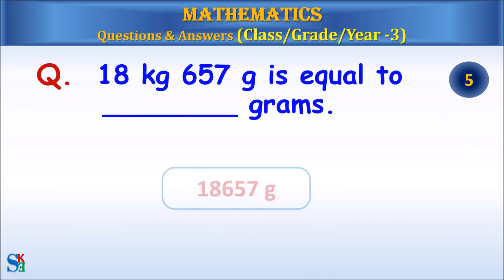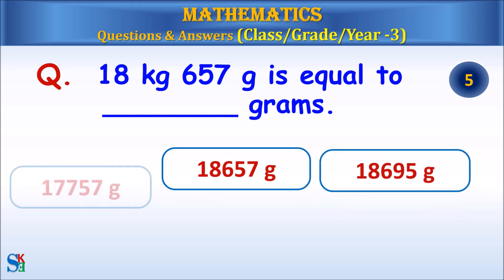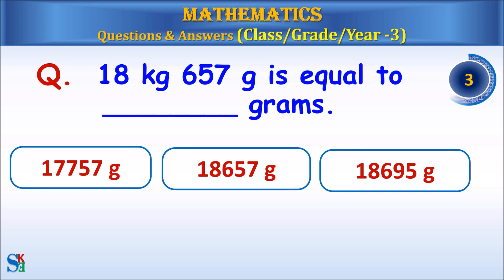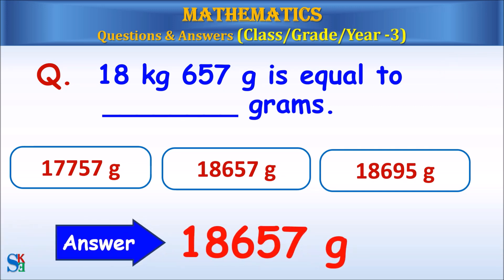18 kg and 657 grams is equal to how many grams? Answer: 18,657 grams.